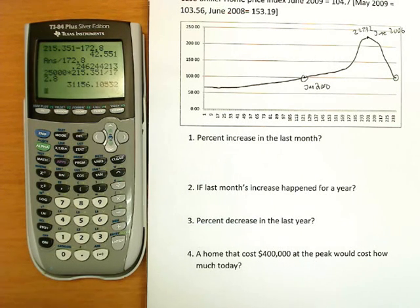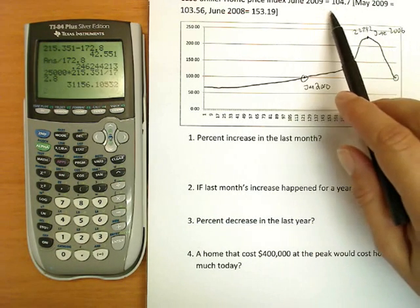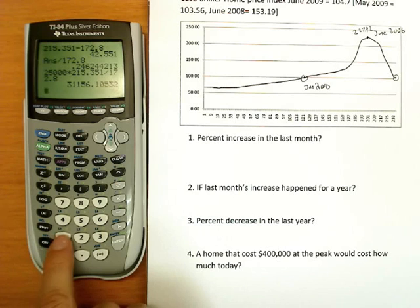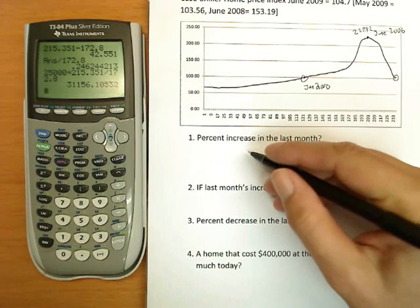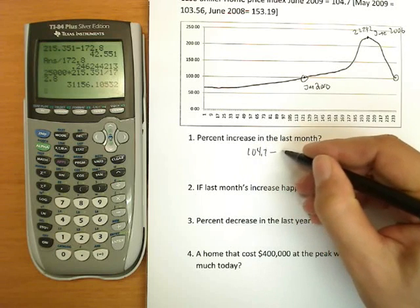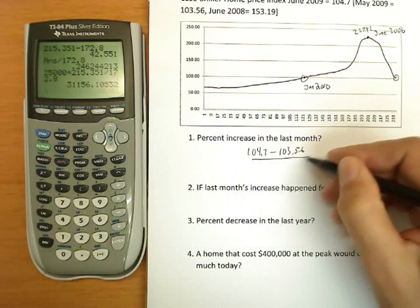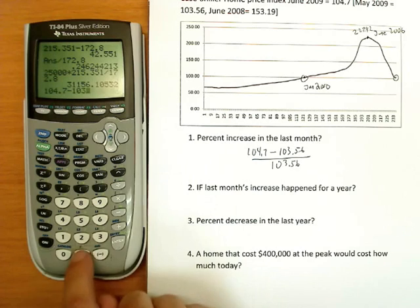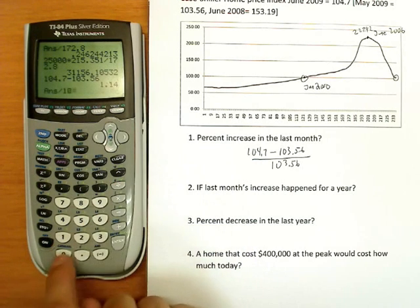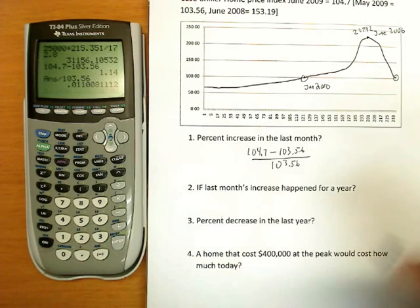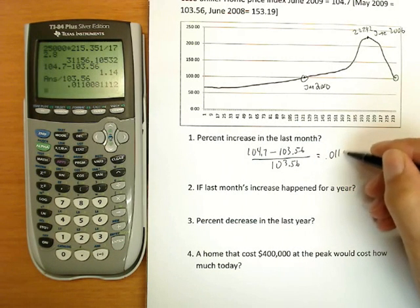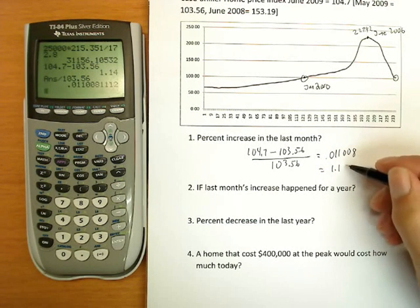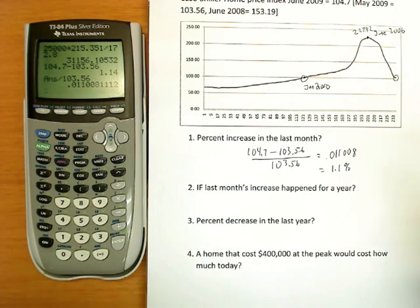Okay, after your pause now, we're looking at our answers. Percent increase in the last month. In the last month, the index ended at 104.7. It started at 103.56. So to answer that, we're going to find the difference. We'll take today's number, 104.7 minus 103.56, and we'll put it over the 103.56, the first number in time. So 104.7 minus 103.56, enter, divided by 103.56. And we get a decimal answer of .011008. Turn to percent, 1, moving it to spots, we get 1.1%.